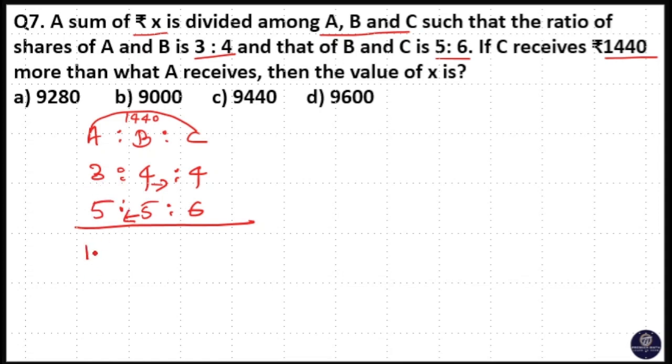When you multiply 5 into 3, 15. 5 into 4, 20. 6 into 4, 24. And you know the difference between A and C.